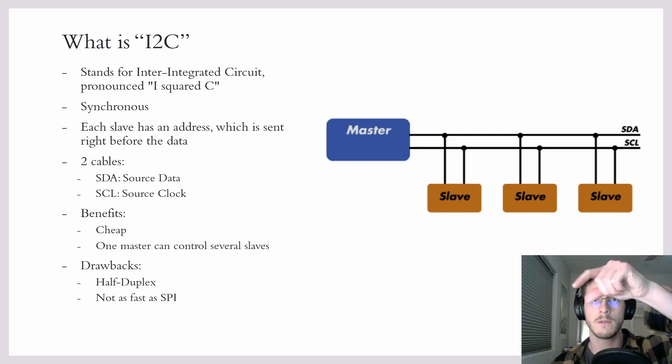You can't do bi-directional communication at the same time. So that's what half-duplex means. As a result of this it's not as fast as SPI, but depending on what your needs are this might be fine.